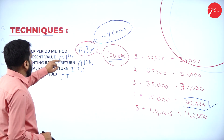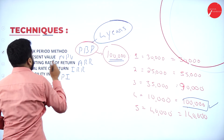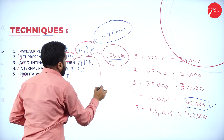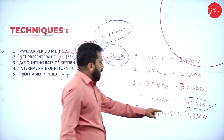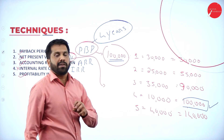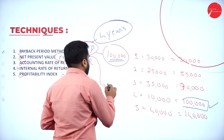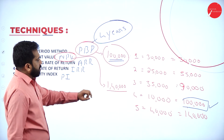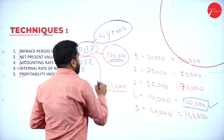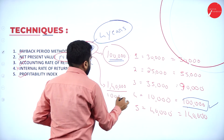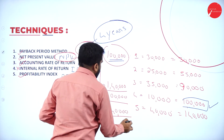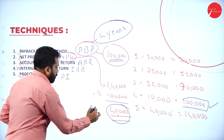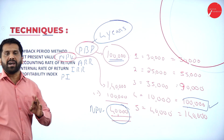Net present value (NPV): the total cumulative income is 1 lakh 40,000 minus your investment of 1 lakh. Your answer is 40,000. That is called NPV — Net Present Value. ARR and IRR will be covered in detail while doing the problems.